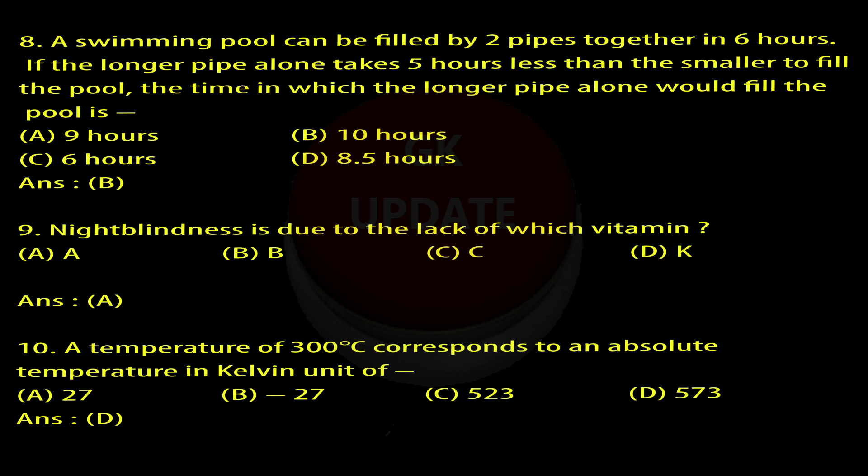Question 8: A swimming pool can be filled by two pipes together in six hours. If the longer pipe alone takes five hours less than the smaller pipe to fill the pool, the time in which the longer pipe alone would fill the pool is: A. 9 hours, B. 10 hours, C. 6 hours, D. 8.5 hours. Answer: B.